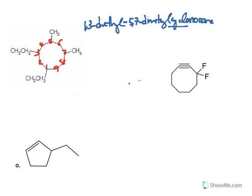For the second example, in naming cycloalkenes, the priority goes to the double bond. You always give the double bond number one. So the double bond is between carbon one and two over here.